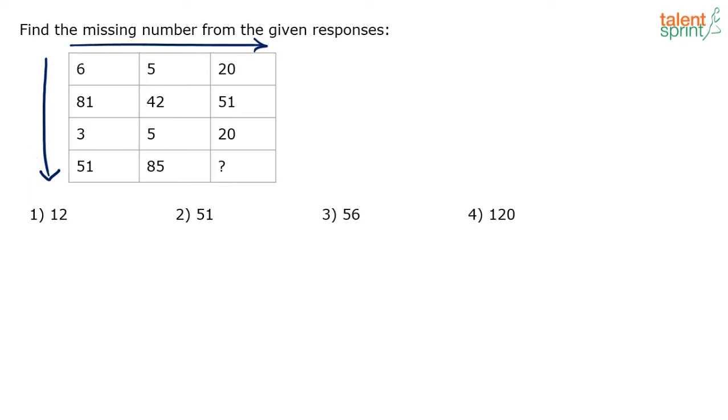Without wasting time on trial and error, let me give you the solution. The interesting part is the second row: this 81 is actually 8^1, 42 represents 4^2, and 51 represents 5^1.